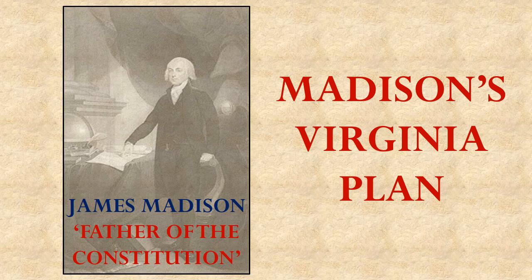When you show up at a meeting where people want to get things done and nobody has a plan except one person, that one person with a plan is likely to dominate the meeting. That's how it worked out for James Madison. He was the only person to show up with a plan, so his plan became the outline for what eventually became the United States Constitution, serving as the agenda the meeting followed — taking his plan apart piece by piece to see what worked best.